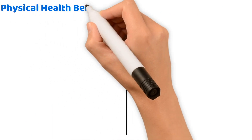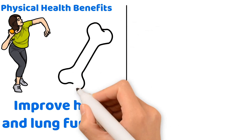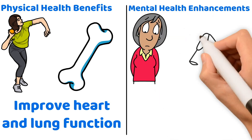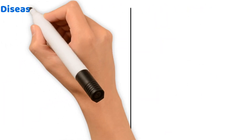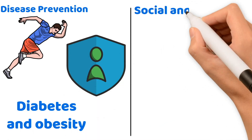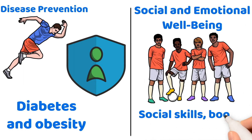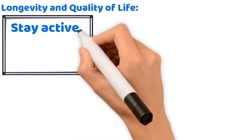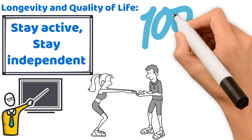Promote activities like aerobics to improve heart and lung function, while strength training builds robust bones and muscles. Teach stress reduction through yoga and boost brain health with strategic games that enhance cognitive function. Regular physical activity is your best defense against lifestyle diseases like diabetes and obesity. Sports and team activities foster social skills, boost self-esteem, and build confidence. Teach the importance of lifelong physical activity to enjoy a high-quality life well into old age.